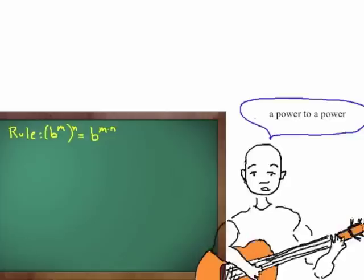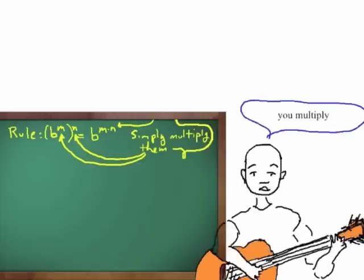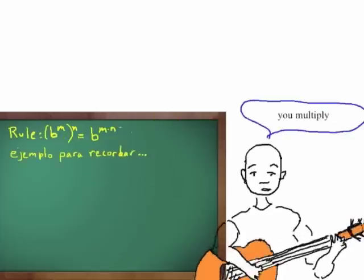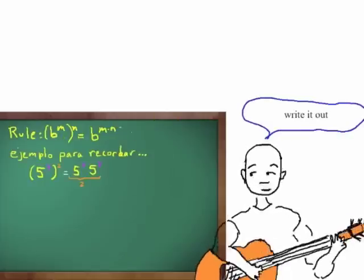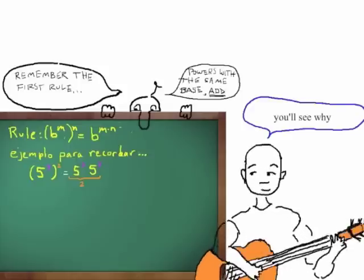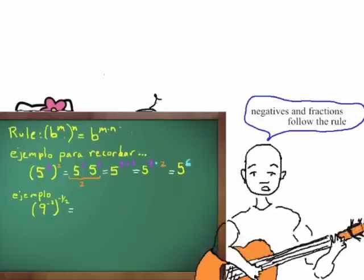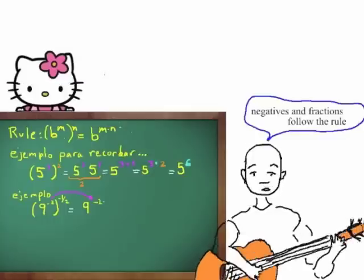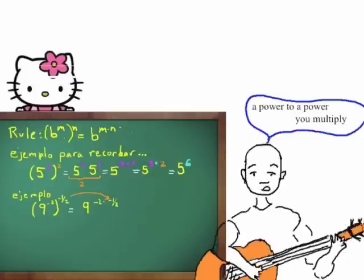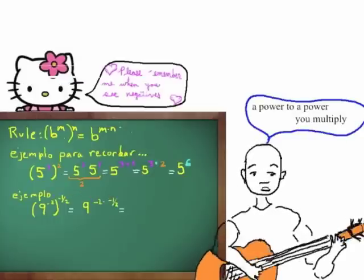A power to a power, you multiply. Write it out and you'll see why. Negatives and fractions follow the rule — a power to a power, you multiply.